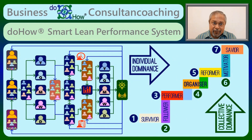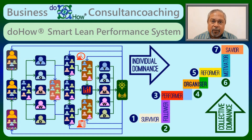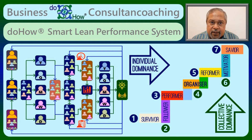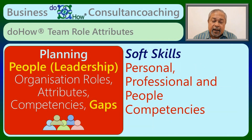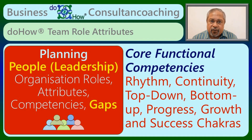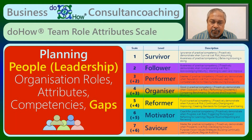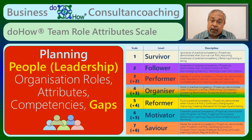Today, I will introduce the team role attribute module of DoHow for achieving these performance indicators or metrics. For example, for the performance indicator or metric of sales, the role of a sales and marketing executive is obviously necessary, apart from other important support roles. The DoHow team role attributes module is used to define the context, soft skills and core functional competencies necessary for a sales and marketing executive on a maturity scale based on the spiral dynamics model of the evolutionary development of individuals, organizations and societies by Clare W. Graves, other motivational theories, and the CMMI model.